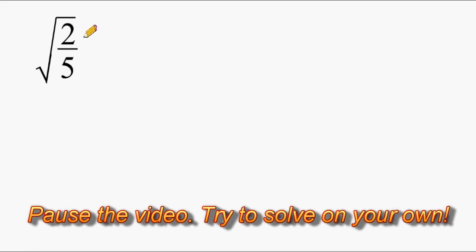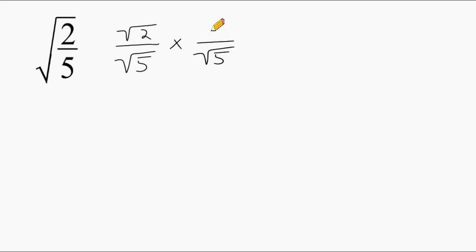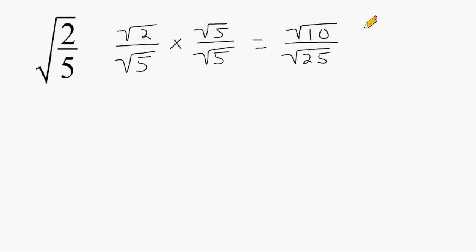For this problem, notice that the numerator and the denominator are both under the radical symbol. When that occurs, I like to rewrite it as the square root of 2 over the square root of 5. We still have to rationalize the denominator by taking that denominator and multiplying by the square root of 5 over the square root of 5 — we're still multiplying by one whole, which gets rid of the radical on the bottom. That gives us the square root of 25 on the bottom and the square root of 2 times the square root of 5, which is the square root of 10, on top. The square root of 25 is 5, and since there are no perfect square factors of 10, we leave it under the radical. So the answer is the square root of 10 over 5.